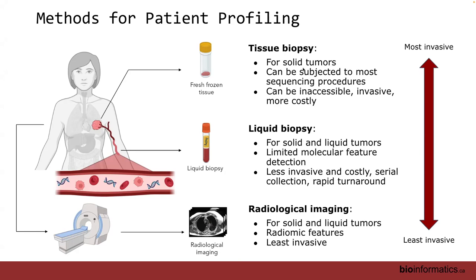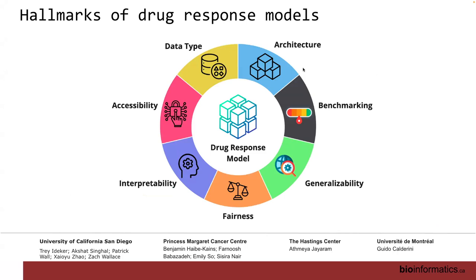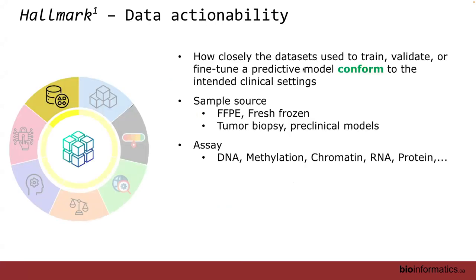We recently came up with what we call hallmarks of biomarkers — or hallmarks of drug response models. These are concepts to keep in mind when developing biomarkers. The first hallmark is data type: what kind of data do you want to use for biomarker discovery? Is it something that already exists in the clinic, or is it very expensive and invasive that only few patients can afford? There are also ethical questions — if only rich people can access a technology, that's not ideal. If you can find a biomarker using radiology or pathology, virtually all patients can benefit.